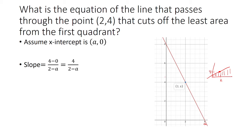And now we can find the slope. We just do 4 minus 0 over 2 minus A, and we're going to use y minus y₁ equals m times x minus x₁.